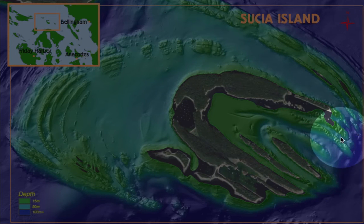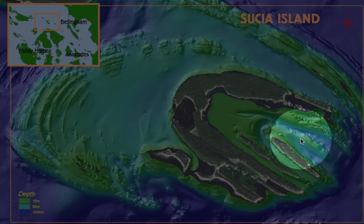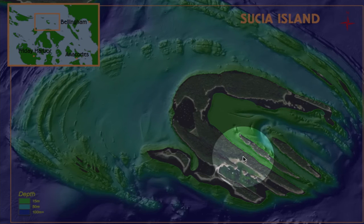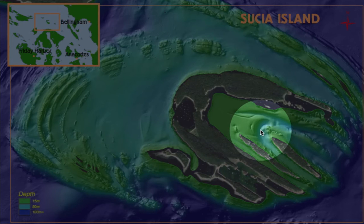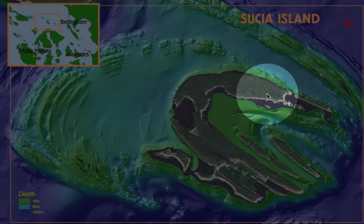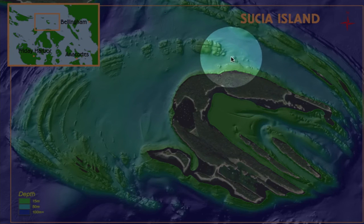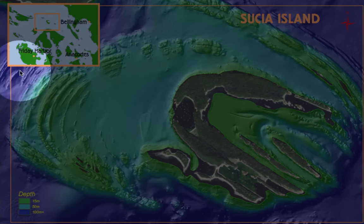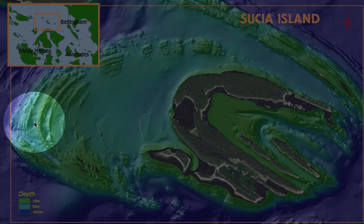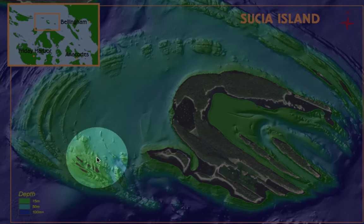These beds over here dip down towards the axis, and beds over here dip down towards the axis. So this is a syncline that has been folded, and you can see the limbs of the synclines out and through here that have been folded as well.